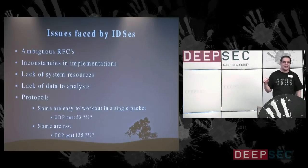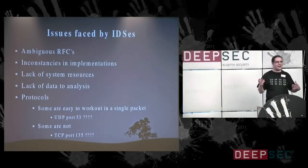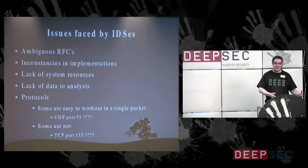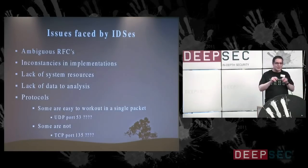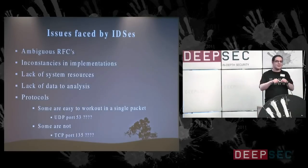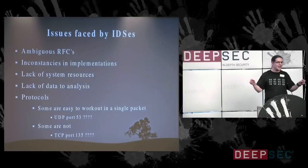Inconsistencies in implementations — what I mean is, take an implementation like a web server or HTTP server. How Apache and IIS do things is slightly different, and there is an inconsistency between those two. However, our IDS has to play referee in the middle and understand those inconsistencies, and if it doesn't fully understand them, bad voodoo can happen.